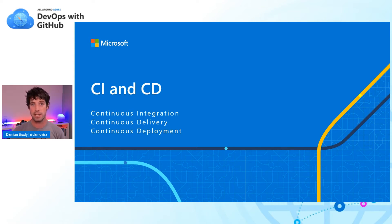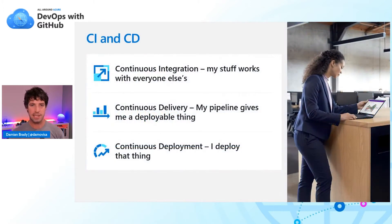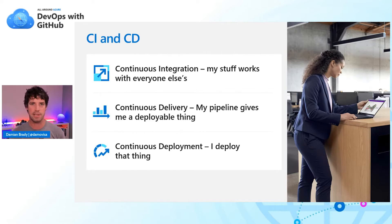CI is continuous integration, and we've looked at some of that already. CD can be continuous delivery or continuous deployment, depending on what you're talking about. Continuous integration is essentially making sure that my code works with other people's code — when I make a change and commit that to the repository, it builds alongside everybody else's changes, our tests pass and everything looks good. That's what continuous integration is about.